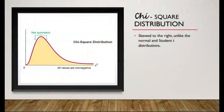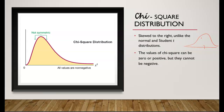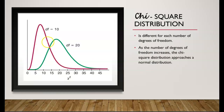Chi-square distribution is skewed to the right, unlike the normal and Student t distribution that are symmetric about zero. The values of chi-square can be zero or positive, but they cannot be negative. Chi-square distribution is different for each number of degrees of freedom. As the number of degrees of freedom increases, the chi-square distribution approaches a normal distribution. The smaller the sample size, the more skewed to the right the chi-square distribution is.